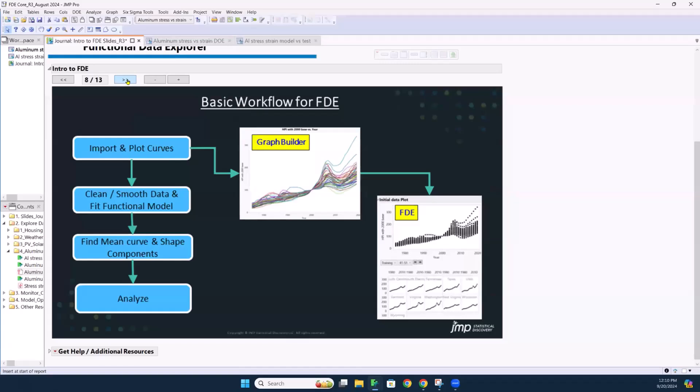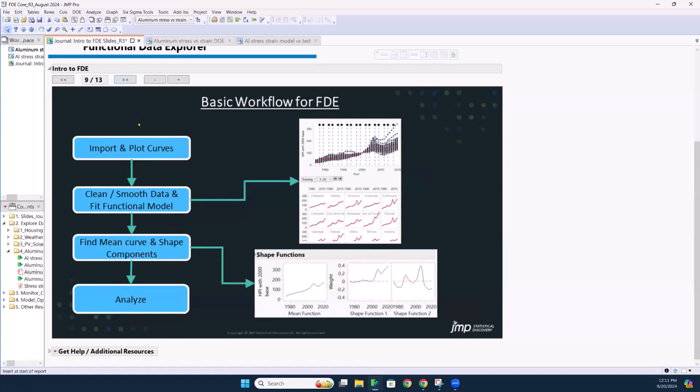Okay. Basic workflow of analyzing responses in FDE, again, is the functional data explorer. We're going to start with import and plot our curves. Visualization is always key. Probably always going to do that in graph builder. However, in the platform, you will also get kind of a stripped down version where it overlays the curves as well. So we always want to start there. And then we're going to move on to clean, smooth, and then fit a functional model. So cleaning, what do we mean? Maybe you're only interested in a specific portion of the curve, so you can crop it on the x-axis. Maybe you have a spectral analysis where you have drift in the sensor and you can baseline correct. So there's a lot of different tools you can do to clean it.